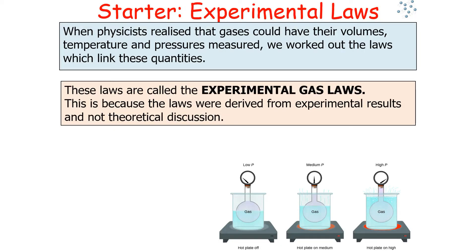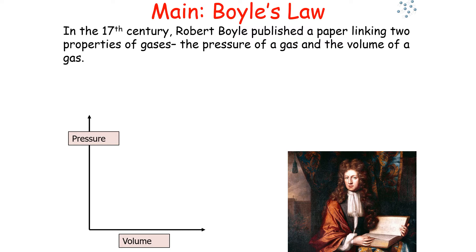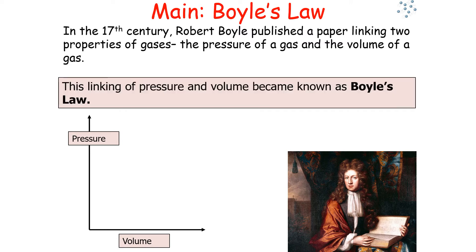When physicists realised that gases could have their volumes, temperatures, and pressures measured, we could look at working out laws to link these quantities. These laws are called the experimental gas laws, because they were devised from experimental results and not derived from theoretical discussion. In the 17th century, Robert Boyle published a paper linking two properties of gases — the pressure and the volume — and this became known as Boyle's law.